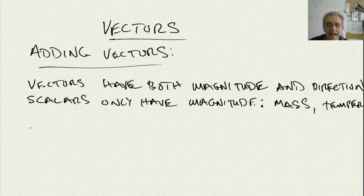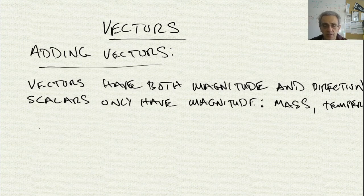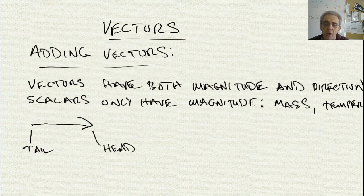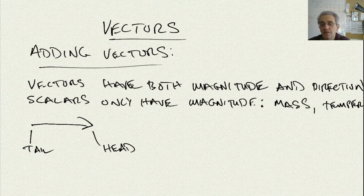Now, how do we add vectors? First of all, we have to define how we represent a vector pictorially. We represent vectors with an arrow. This end is considered the tail of the arrow, and this end is considered the head of the arrow. That arrowhead points in the direction which the vector is acting, or is directed.